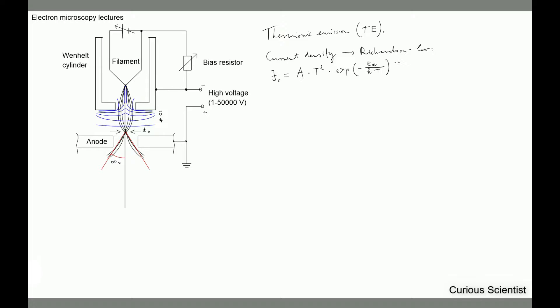The radius of the filament is very small — approximately 100 micrometers, though it can vary from machine to machine. It has a sort of V or hairpin shape at the tip, with a tip radius of approximately 100 micrometers. Just to get some grasp of this: the average thickness of a human hair is roughly 50 to 80 micrometers, so the filament is like twice as large.